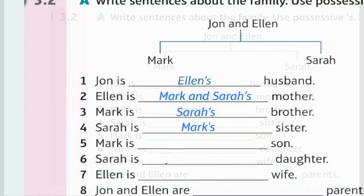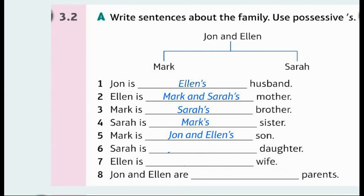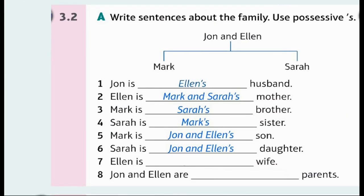4. Sarah is Mark's sister. 5. Mark is John and Ellen's son. 6. Sarah is John and Ellen's daughter. 7. Ellen is John's wife. 8. John and Ellen are Mark and Sarah's parents.